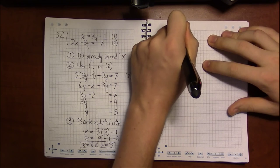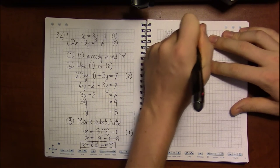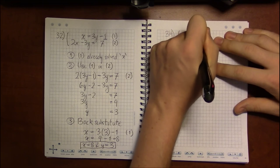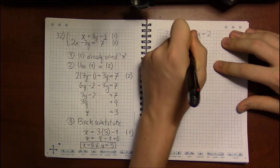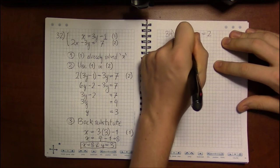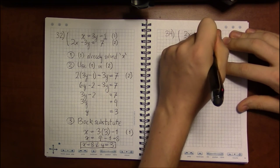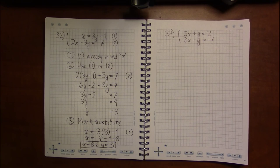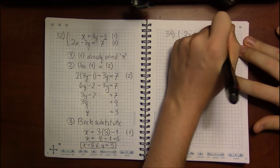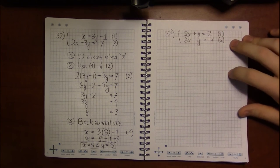On exercise 34, we're looking at the system 2x plus y equals 2, and 3x minus y equals minus 7. So we'll label the top equation as equation 1. The bottom is equation 2.